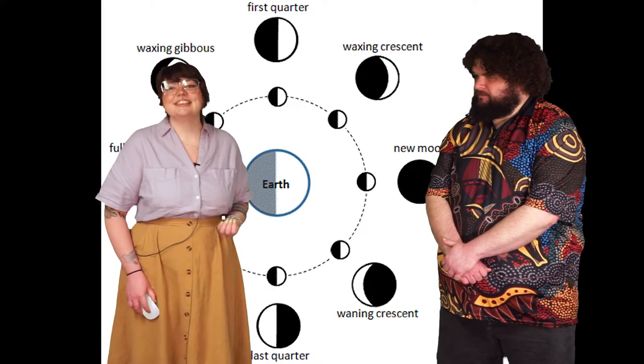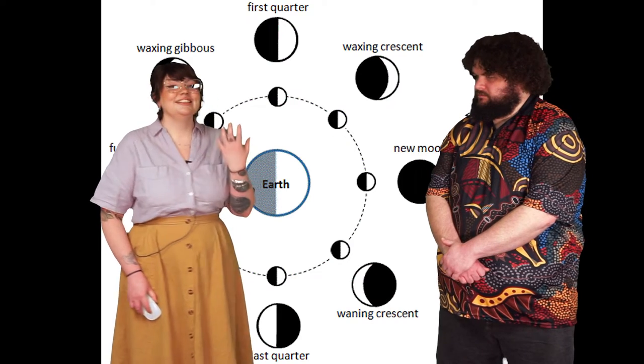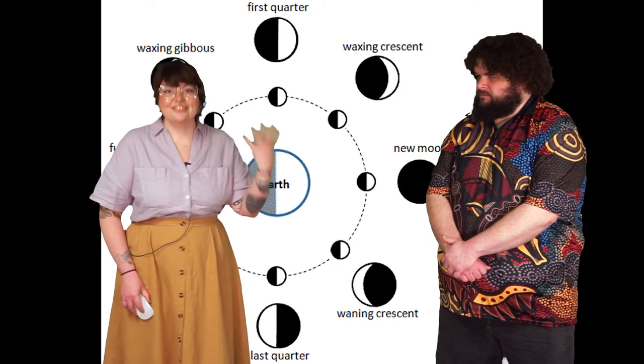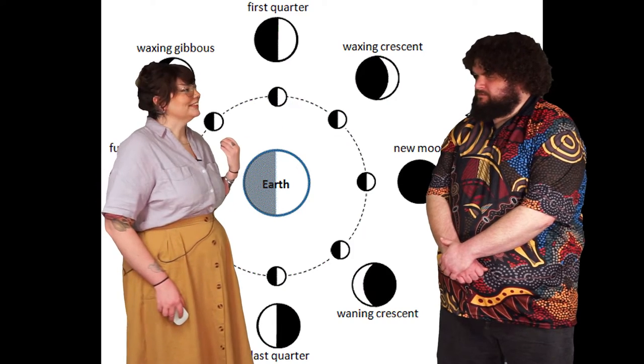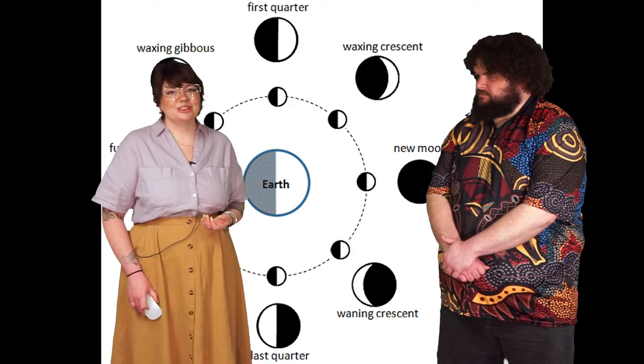A few days later, Nalindi rose again, growing fatter than ever, and this is representing the waxing phase of the moon cycle.